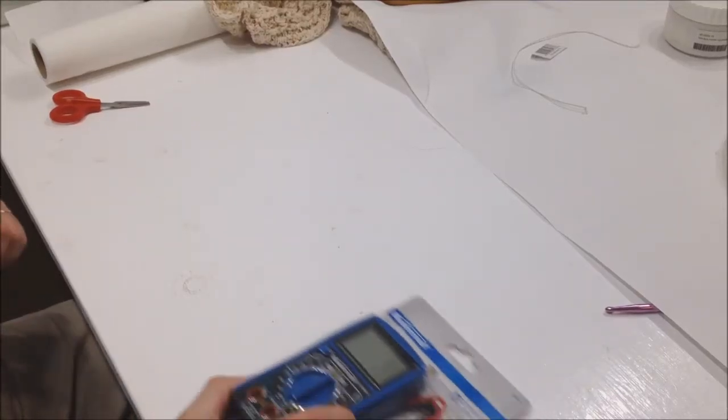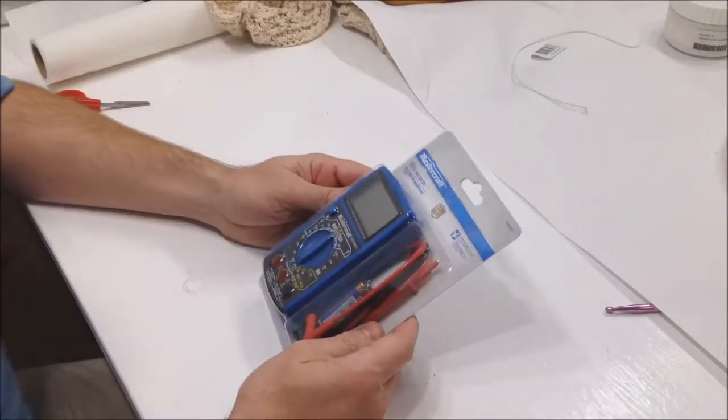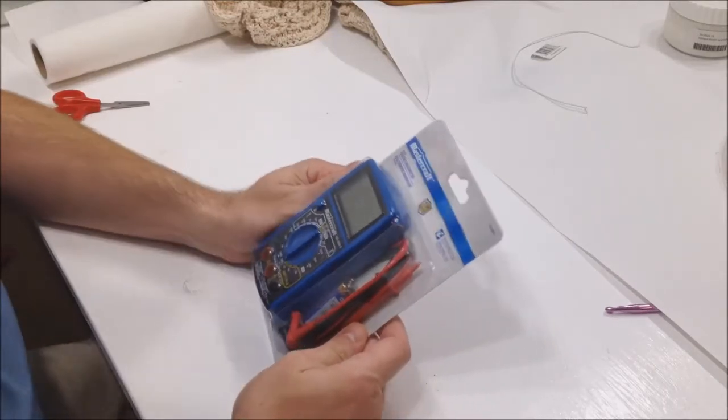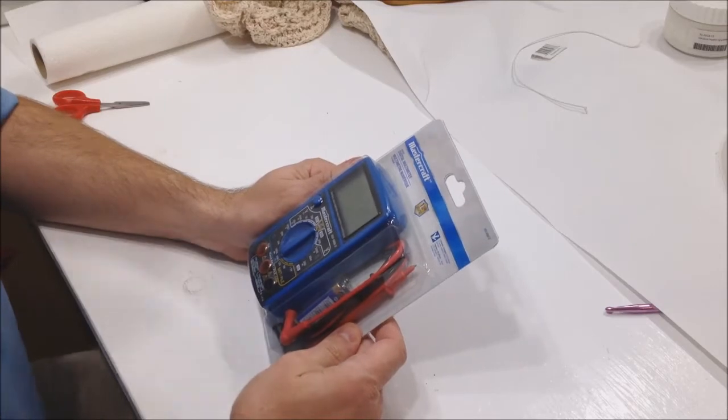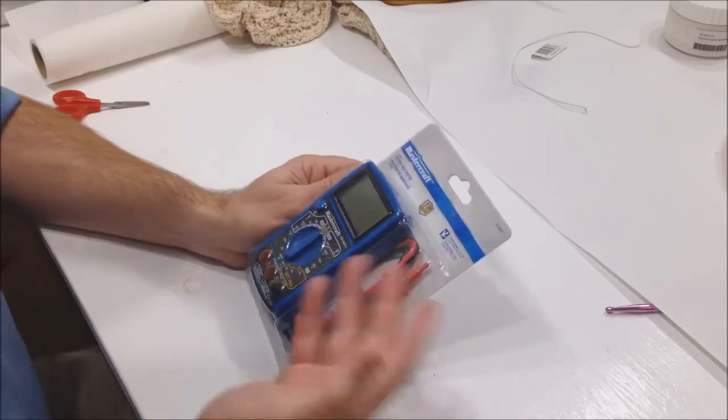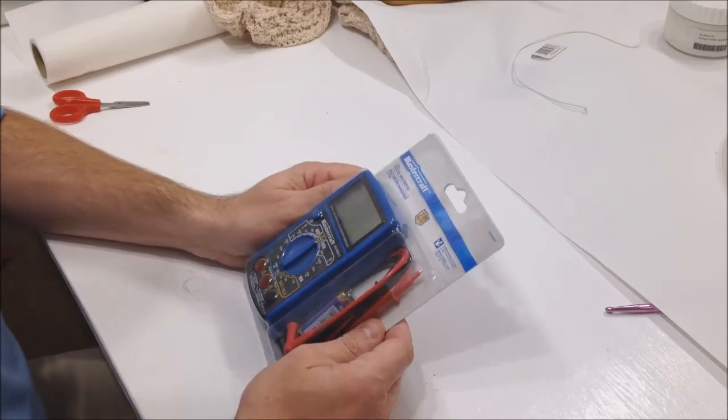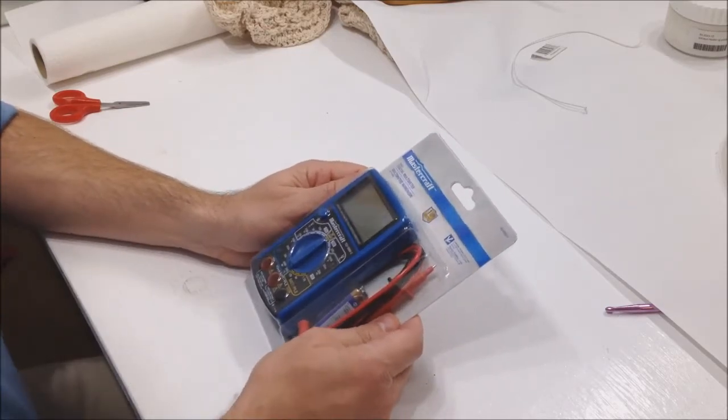I have an unpackaging. Long story short, I had a Mastercraft, which is a Canadian Tire brand of multimeter, that ended up getting lost, so I had to buy a new one. Here's a basic one, it cost me $13, it was on sale. Very handy to have, now not a lot of excitement unpackaging this because I know exactly what I'm getting.